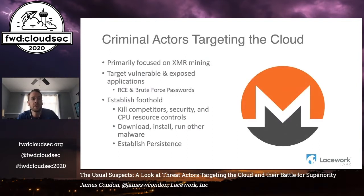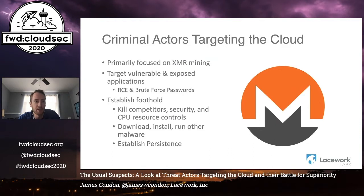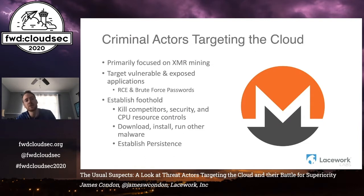When we think about threat actors, there are a lot of different groups out there, and we can bucket them into major types of activity based on who their victims are and what they're ultimately after. APT actors generally carry out nation-state objectives — looking for economic espionage and intellectual property theft. But for the purpose of this talk, we're looking at criminal actors looking to gain money, specifically those targeting public cloud resources. One of the most primary methods they use is Monero mining. We don't see a lot of other coins — we don't really see Bitcoin — this is primarily Monero mining, and occasionally some ransomware.